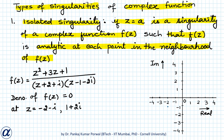Looking at these two points, we can easily draw an open disk about both of them, and there is no other singularity in that disk other than the point itself. So our function f(z) has isolated singularities at z equals minus 2 minus i and z equals 1 plus 2i.